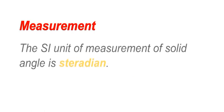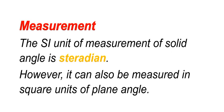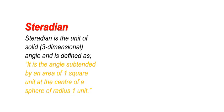Measurement. The SI unit of measurement of solid angle is steradian. However it can also be measured in square units of plane angle. Steradian is the unit of solid or three-dimensional angle and is defined as: It is the angle subtended by an area of 1 square unit at the center of a sphere of radius 1 unit.